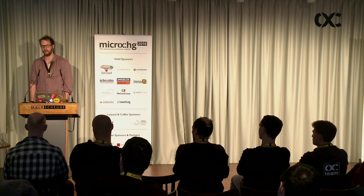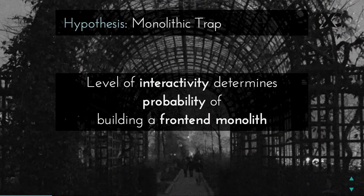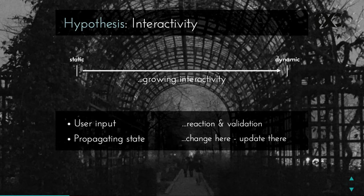So the hypothesis is basically the monolithic trap. The gigantic trap frontend development is kind of always moving towards — always building monolithic applications. Moreover, I would claim that the level of interactivity within your application determines the likelihood of building a frontend monolith. Interactivity is on a scale from static to dynamic. If you have very static content, like an article page, there's not much interactivity going on. But if you have very dynamic content where the user inputs something, you need to validate that input, react to it, and you have propagating state throughout the application — it's going to be very interactive.